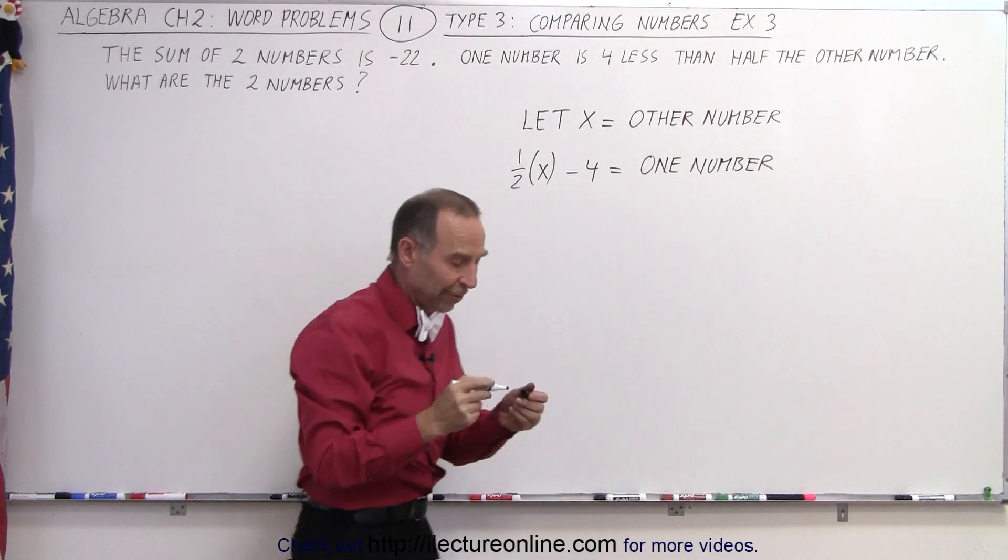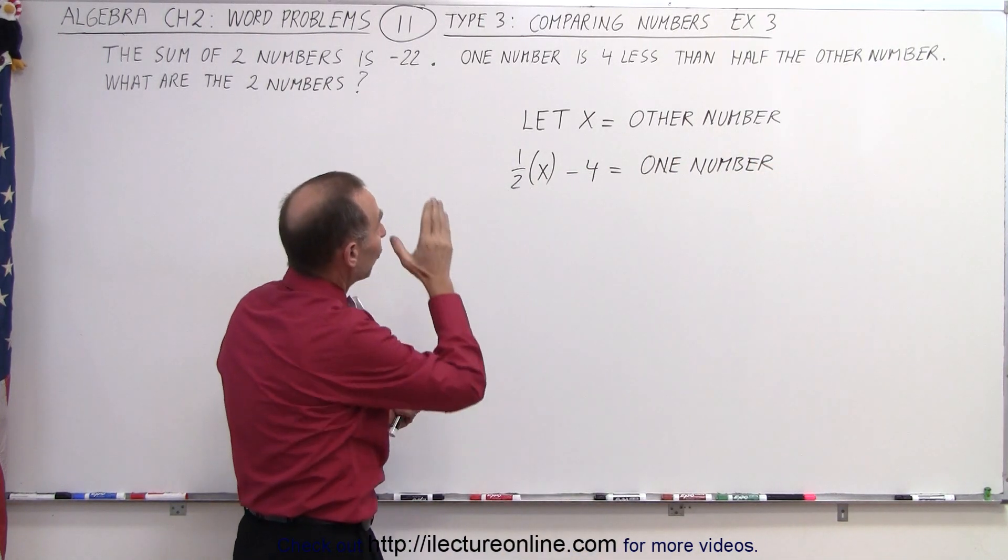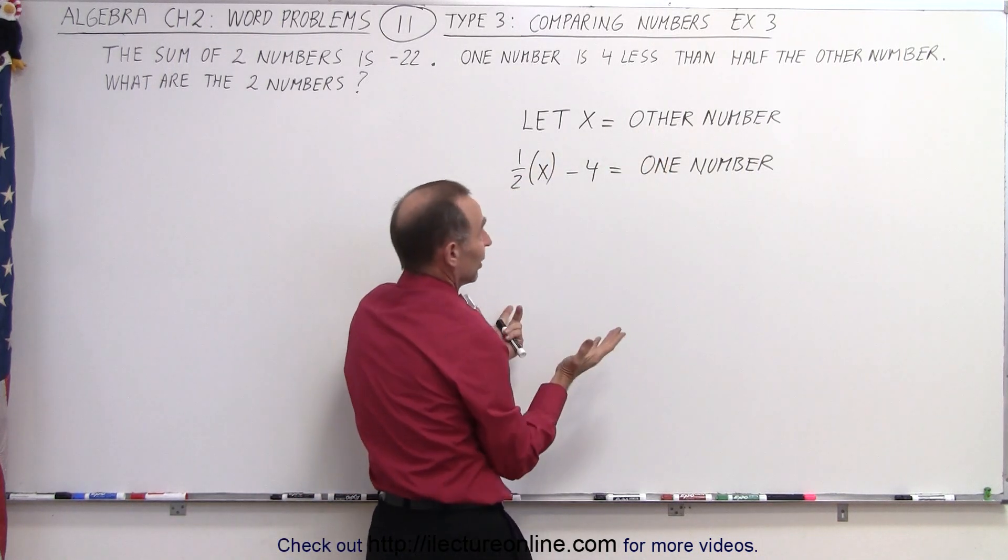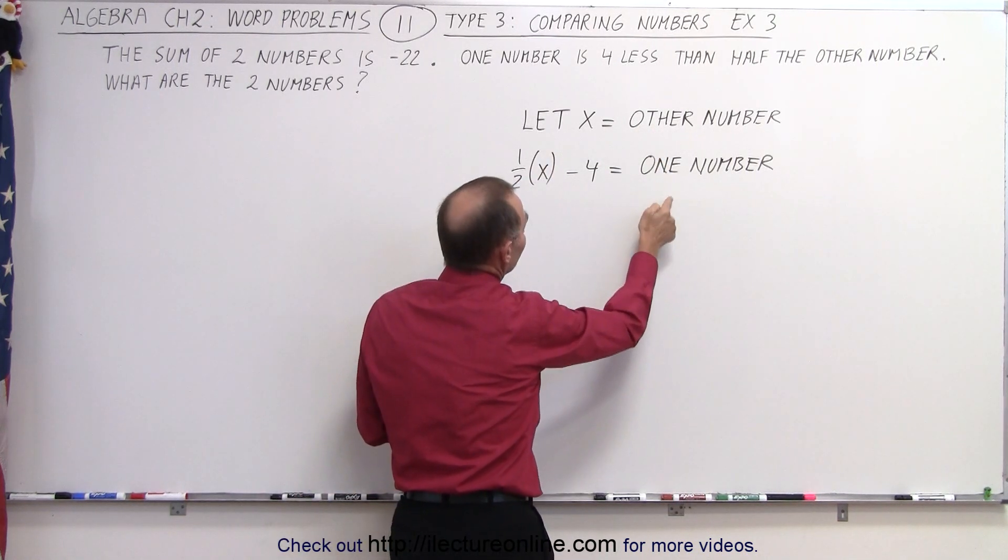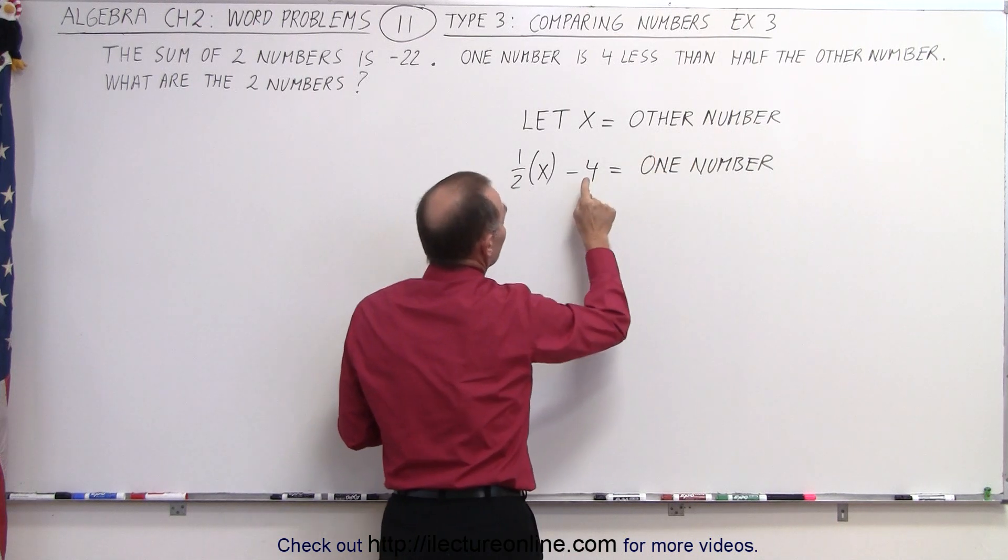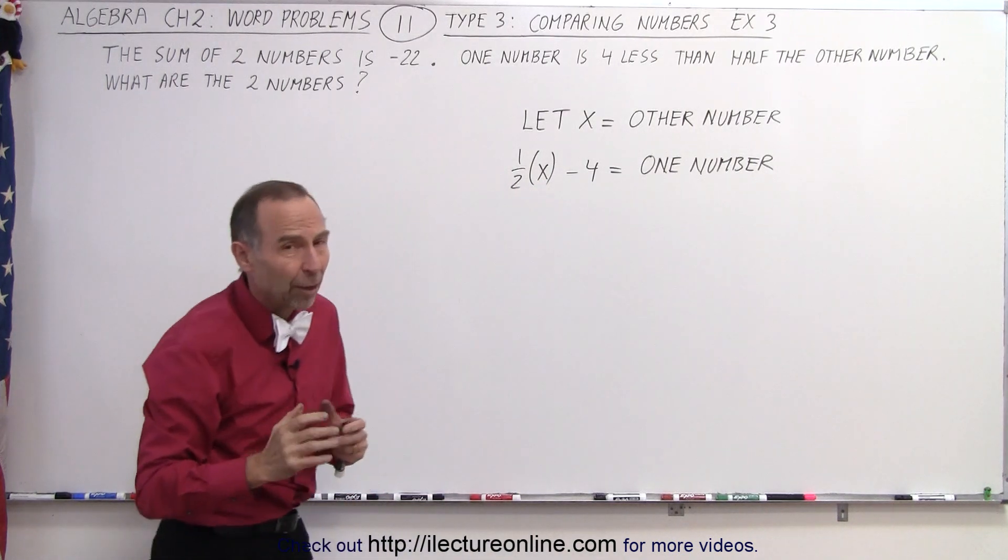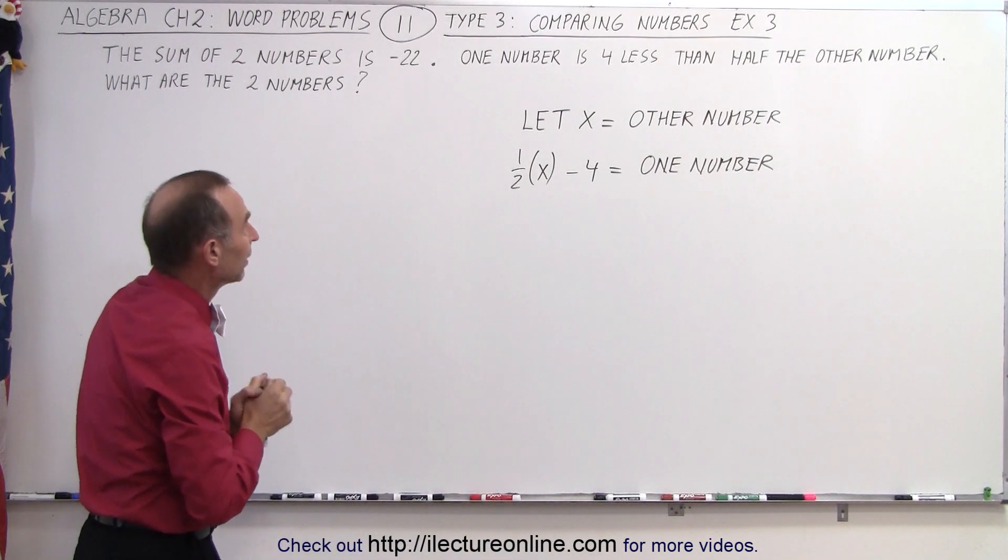So again, let's define it. So we have the one number, which is defined in terms of the other number. So let x equal the other number, because we don't know what it is. And now the one number is defined in terms of the other number as being four less than half the other number. And there we go. That's how we define the two numbers.